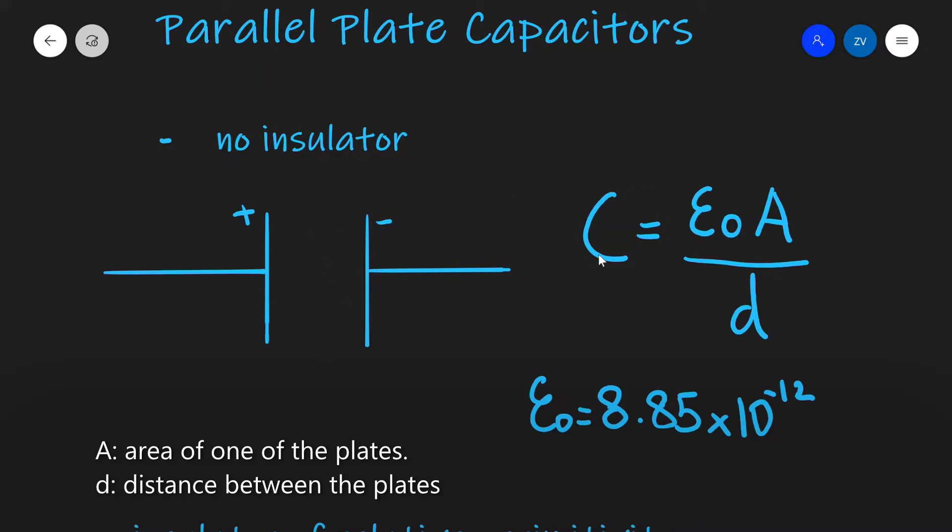The capacitance will be proportional to the surface area of the plates and this makes sense because if the surface area is larger you'll be able to store more charge and hence the capacitance will increase.